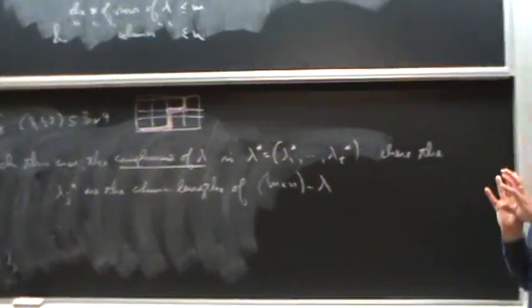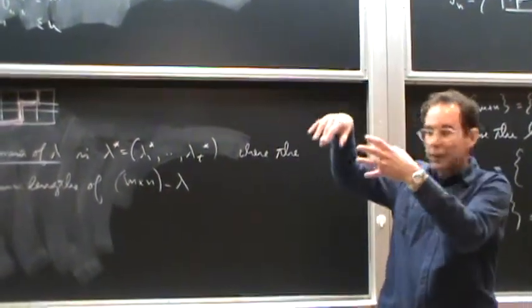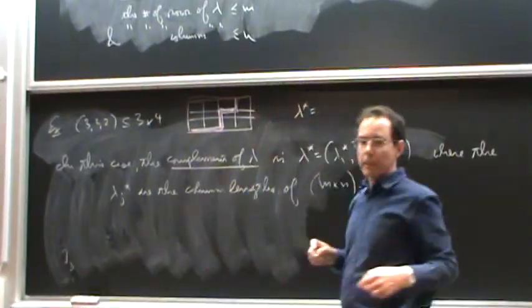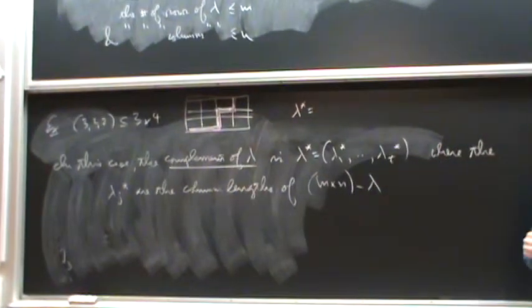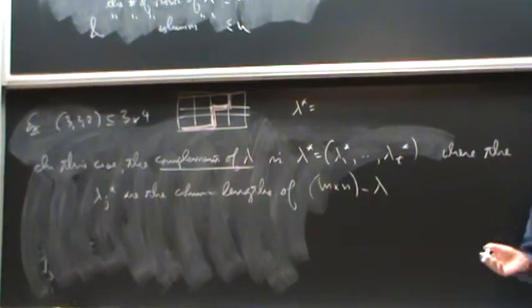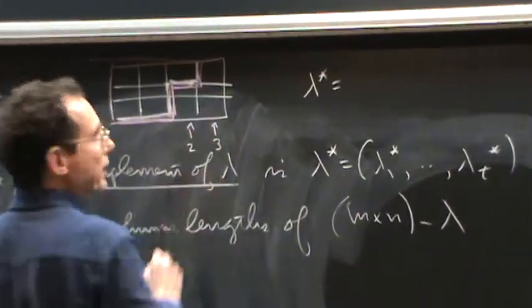So, right, lambda is above this little line that I put in, and then lambda star is below, so what's lambda star for that particular rectangle? 3, 2, right? Because we've got three things up this column, and two things up that column.